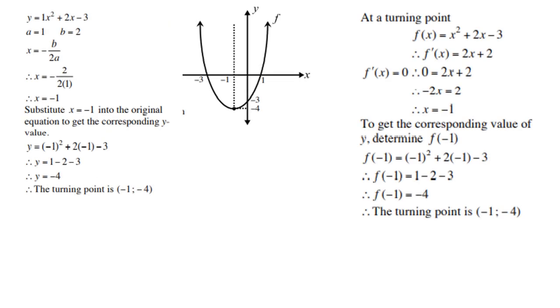There are two ways of determining the turning point. In grade 11, you learned to use the formula x = -b/(2a) for the x-coordinate. Substitute to get x = -1, then substitute into the original formula to get the y value. This grade 11 method is still allowed and you can still use it.